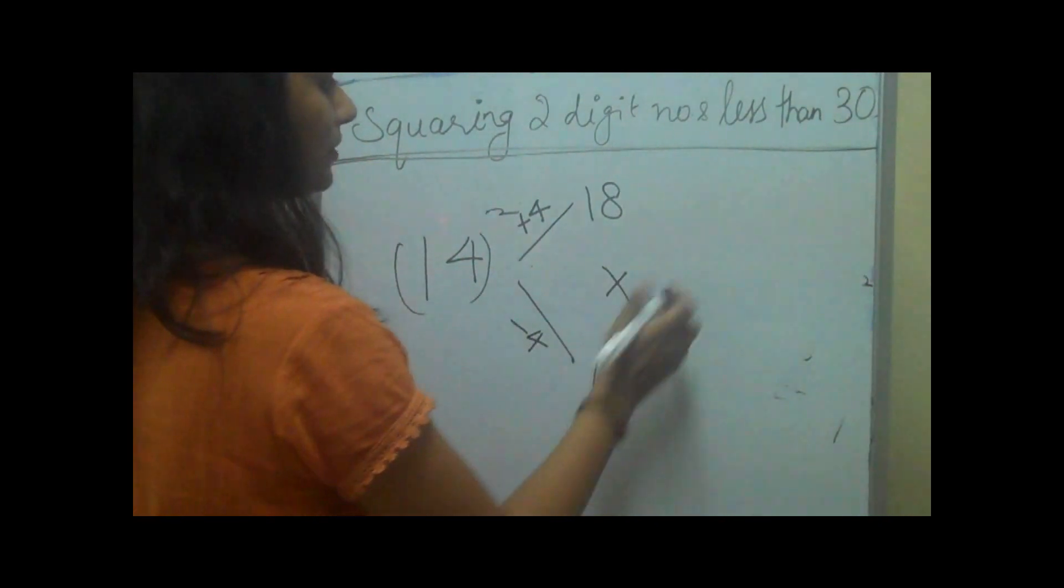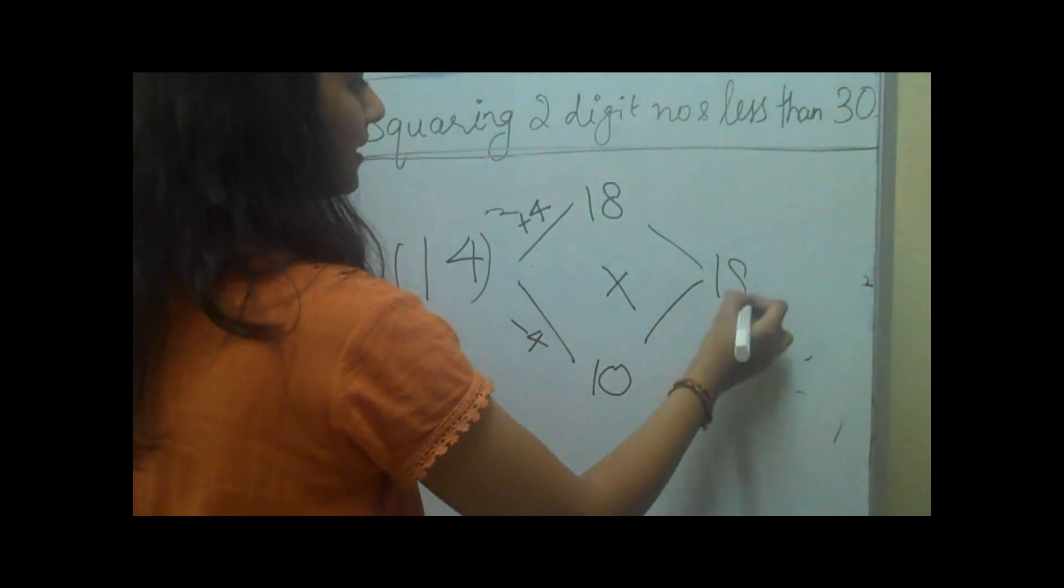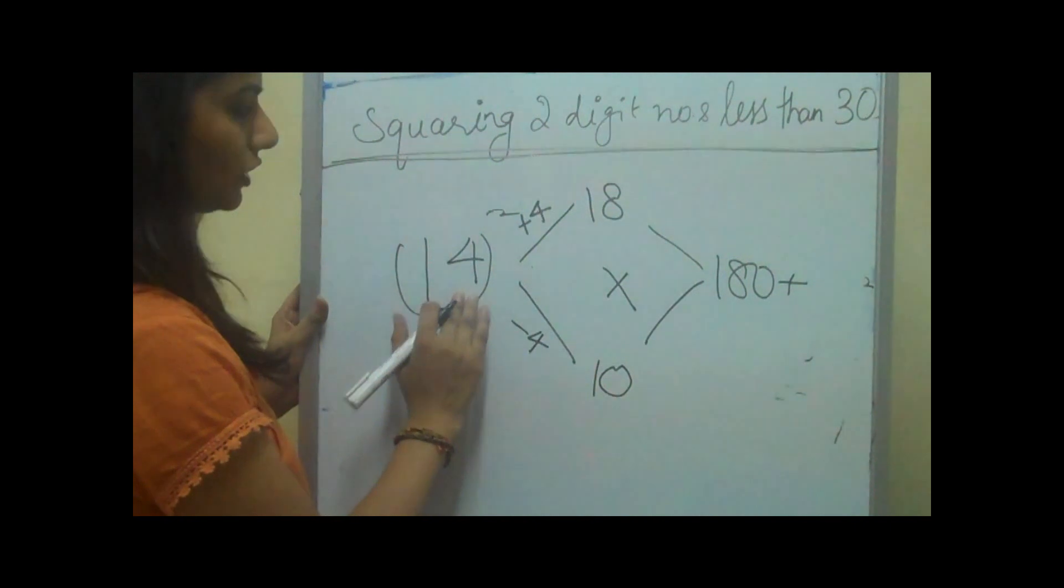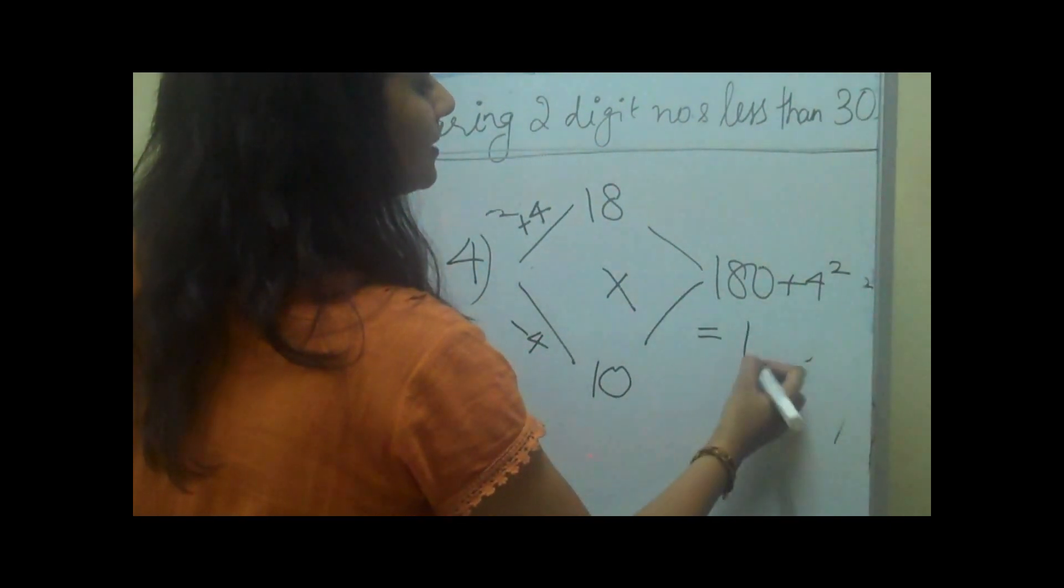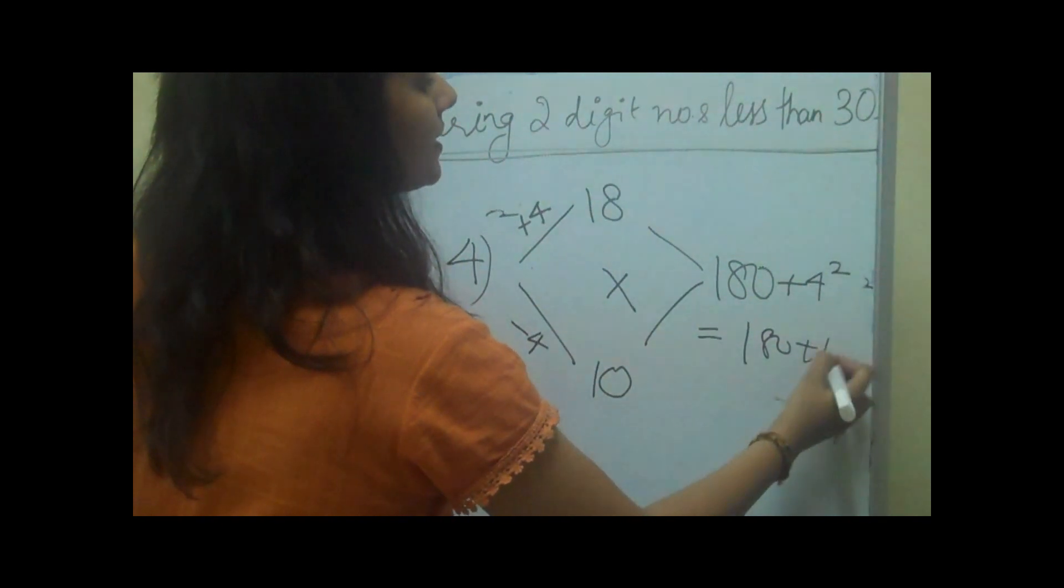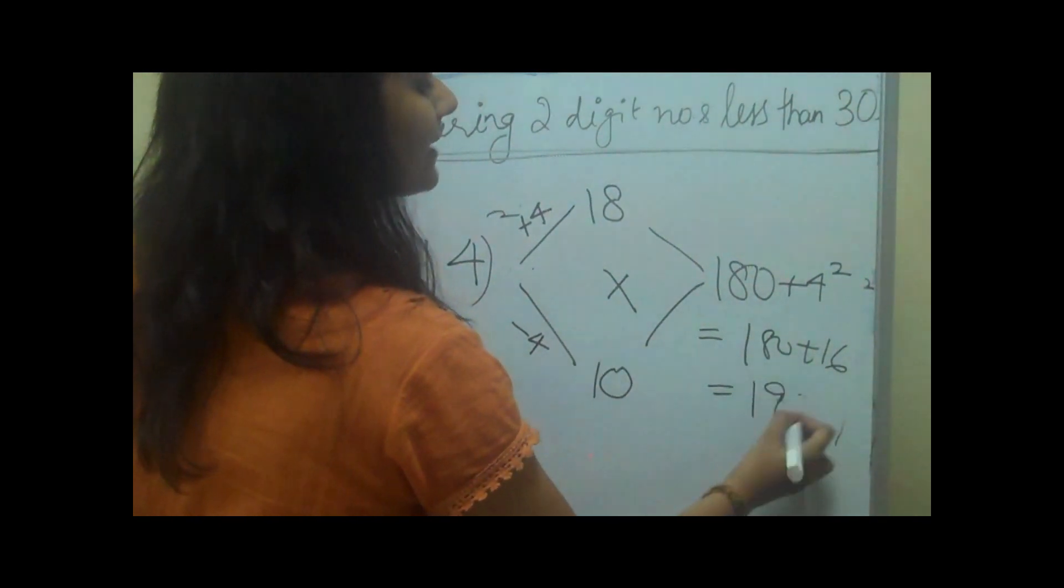This makes 180, and then we'll add the square of the unit digit, which is 4 squared, which makes 180 plus 16 equals 196 as the answer.